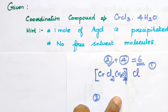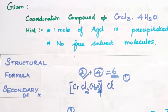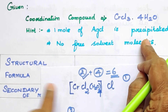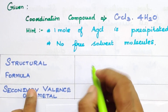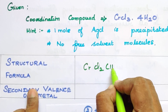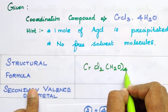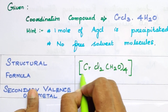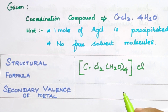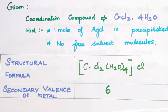The total of 6 ligands gives us the coordination number, so the coordination number is 6. Therefore the secondary valence of the metal ion is 6. So the answer is: structural formula [CrCl2(H2O)4]Cl, and the secondary valence — which is the coordination number of the metal ion — is 6.